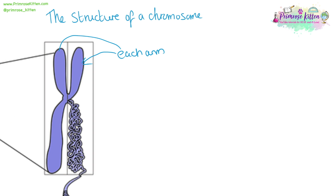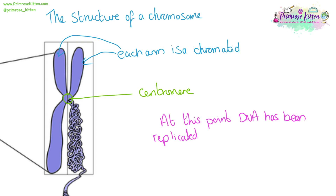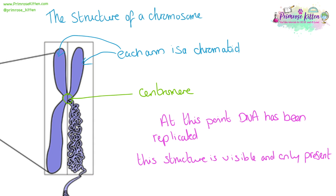Each arm of a chromosome is called a chromatid. These arms are held together by a centromere, which is not always in the middle. When a chromosome has this structure, the DNA within it has already been replicated. This structure is only visible and only present during cell division. For the rest of the time, DNA is not packed into this structure.